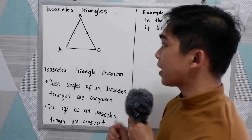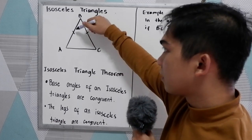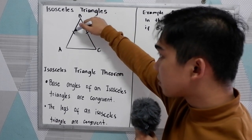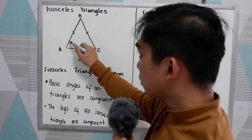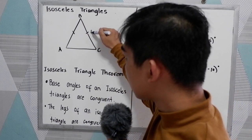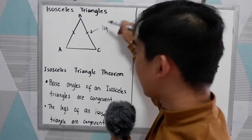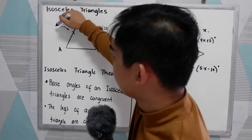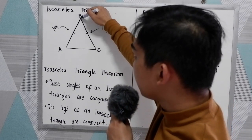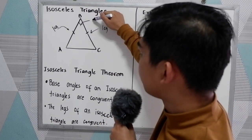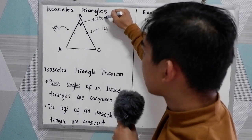By definition, isosceles triangles have what we call the legs. So our legs here are equal. So this is our leg and the other leg. And this is what we call the vertex angle.